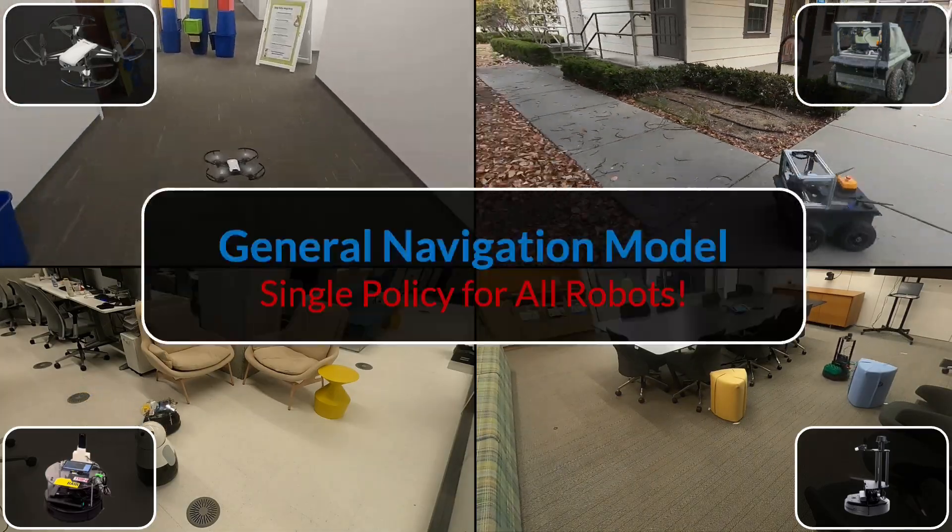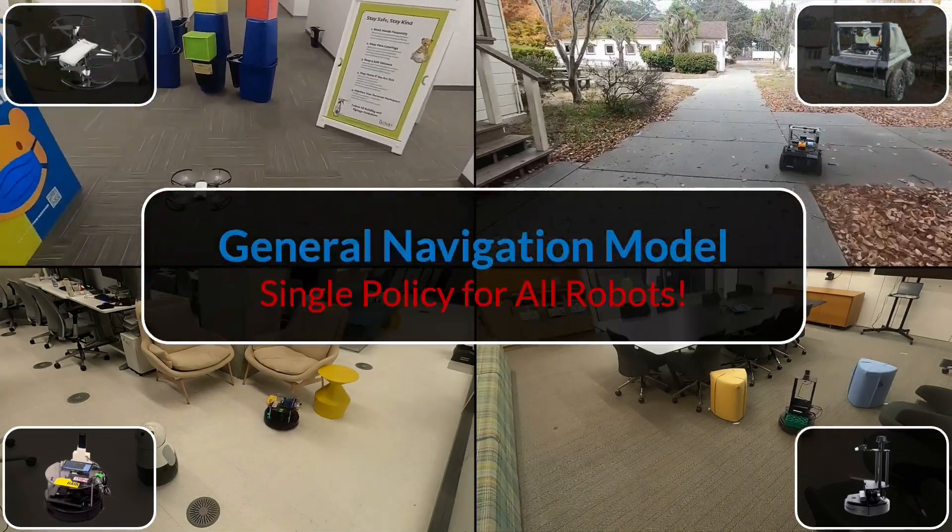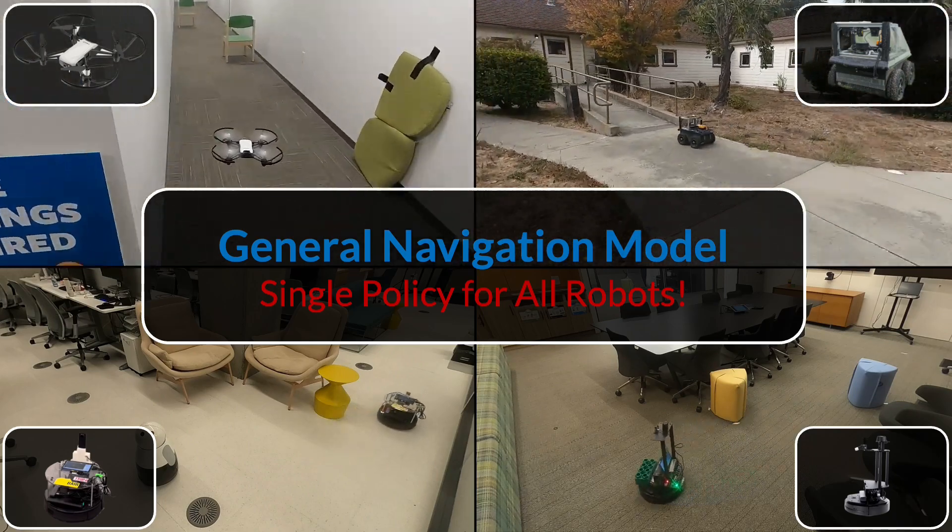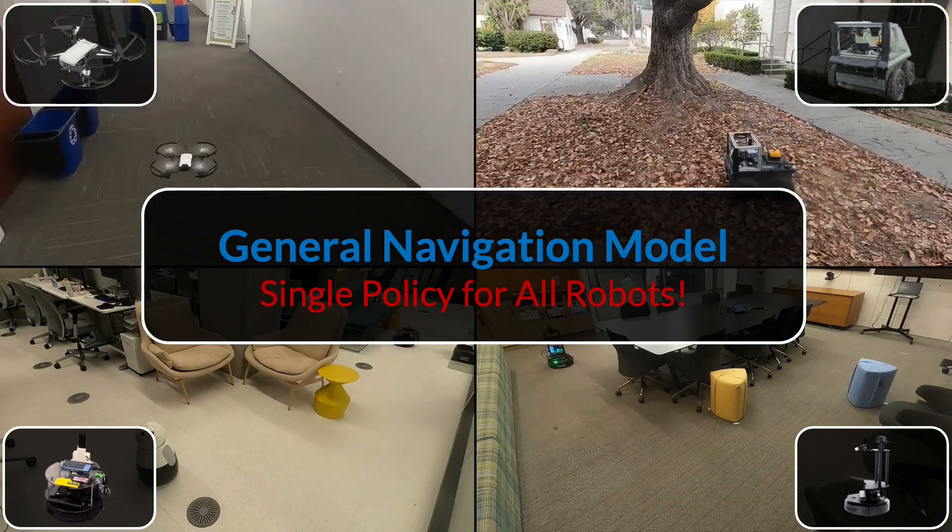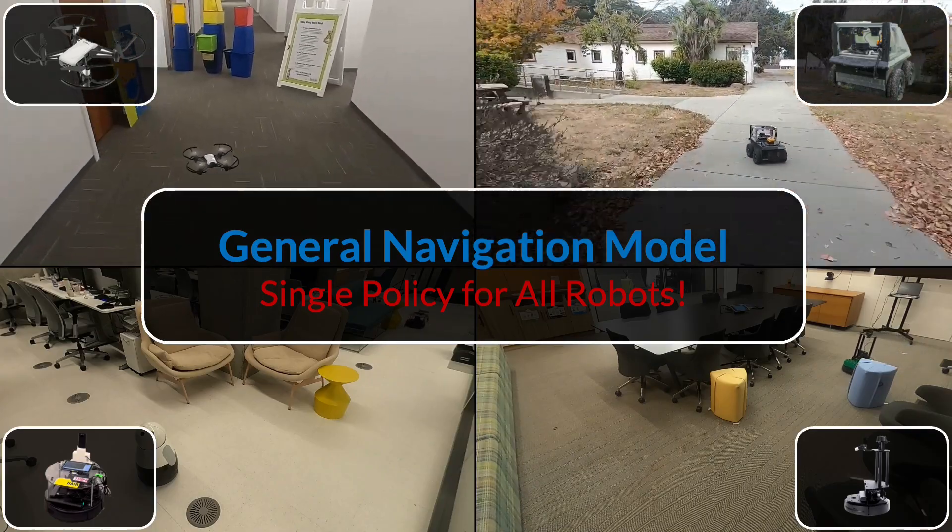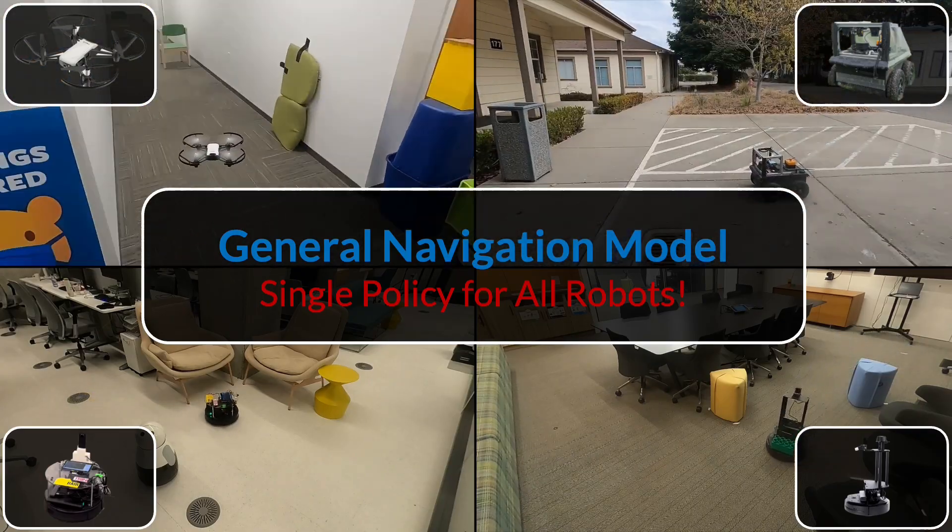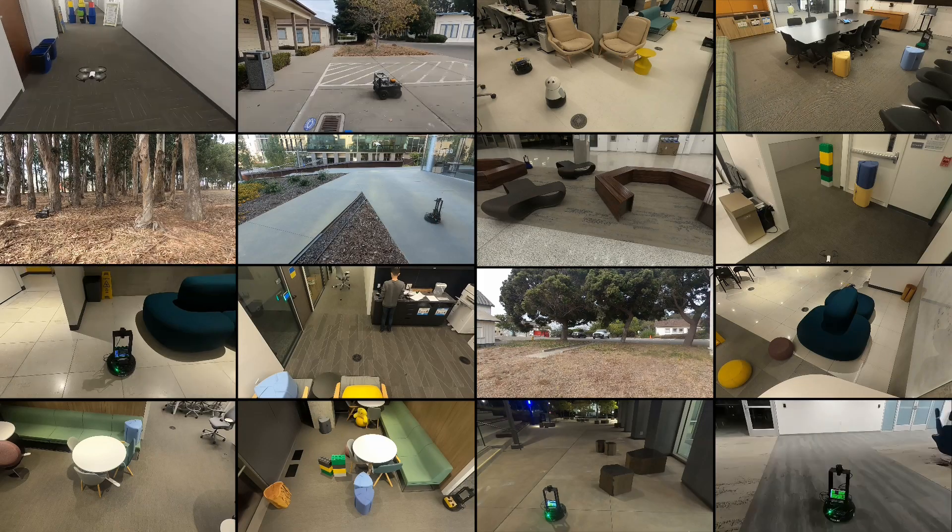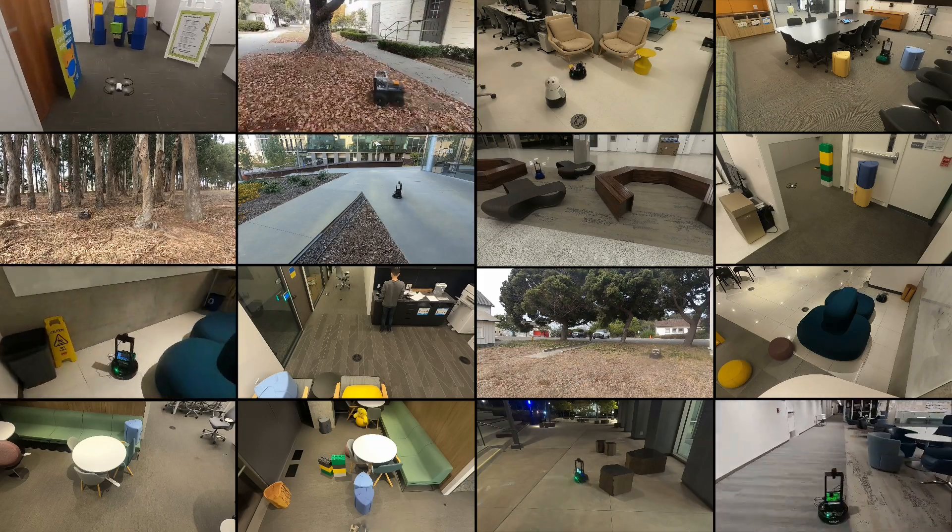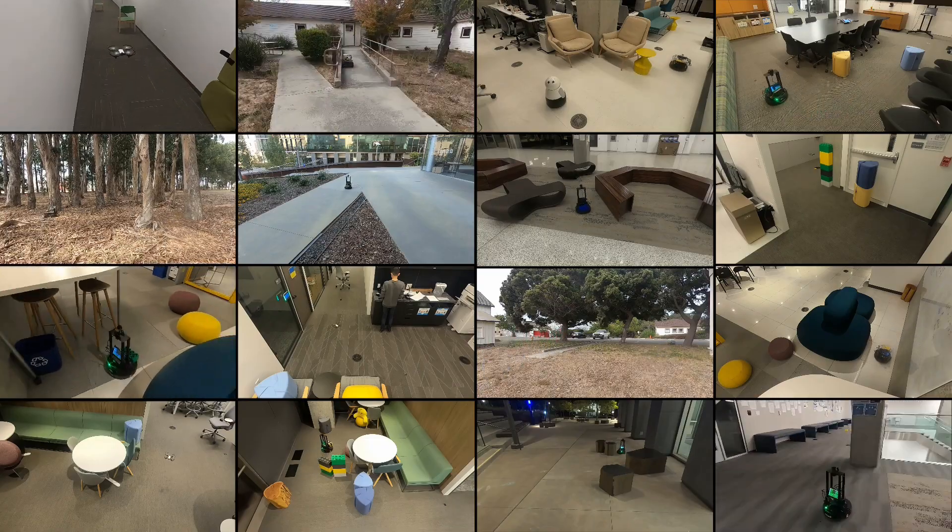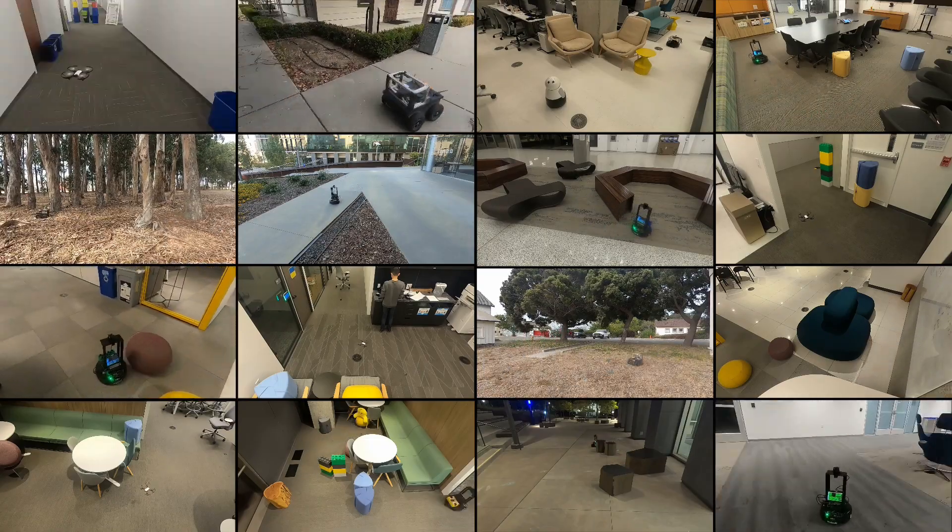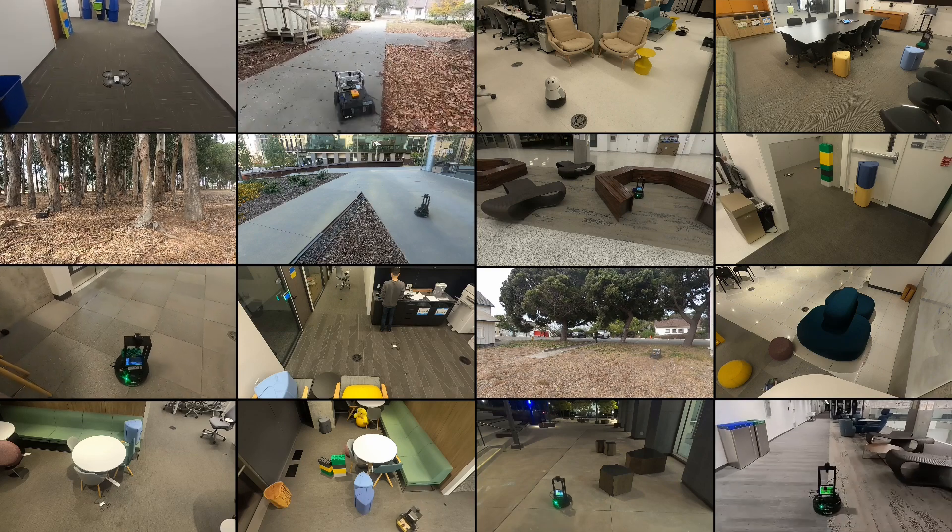We deploy the GNM trained with these modifications on multiple different robots, including new robots. We find that our general navigation model, trained on the heterogeneous dataset, outperforms policies trained with data from any single robot. We test GNM in more than 20 challenging indoor and outdoor environments on four different robots, and find that a single shared model can consistently navigate in all these diverse settings.